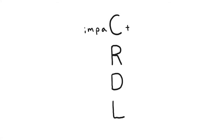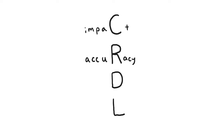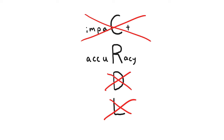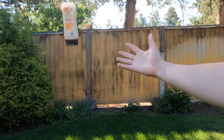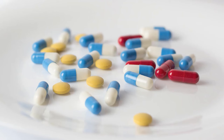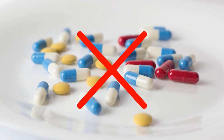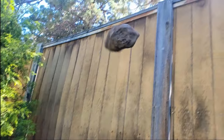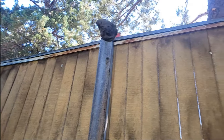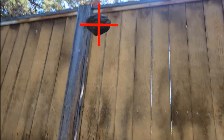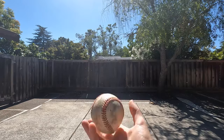Moving on to the second reason why you should cradle the object, which is accuracy. All of the other reasons are completely irrelevant if you're unable to make contact with the ball to begin with. While this is quite possibly an incurable genetic predisposition, cradling the object gives those who are hard of coordination more time to track the object and get their hands somewhere in position.